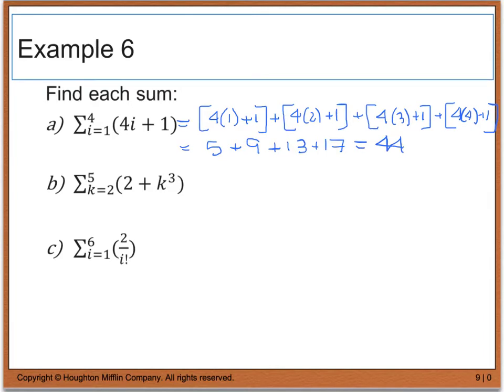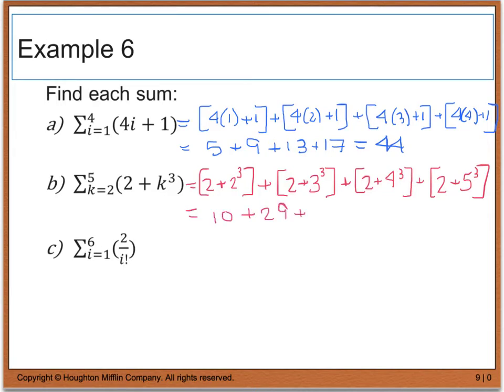For part b, we're going to do the same thing. In this case, I'm going from k equals 2 to 5. So to do that, we're going to go 2 plus, in this case I'm starting out with 2, and I'm going to cube that, and I'm going to add that to 2 plus 3 cubed, plus 2 plus 4 cubed, plus 2 plus 5 cubed. And when I simplify, I end up with 10 plus 29 plus 66 plus 127, is equal to 232.